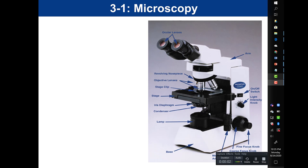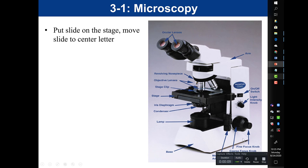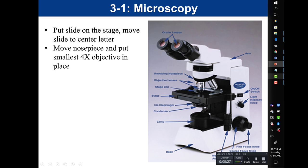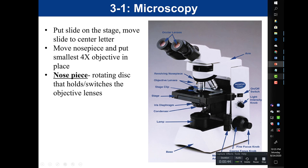Let me review the steps to view your slide. First, place the slide on the stage and use the stage adjustment knobs to center the specimen over the light. Make sure to start with the lowest objective lens — the 4x — in place. The revolving nosepiece is the rotating disc that holds and switches the objective lens.